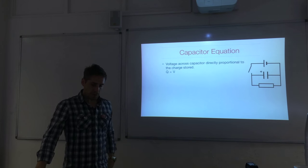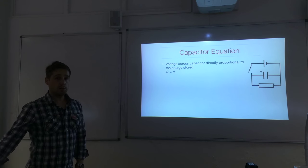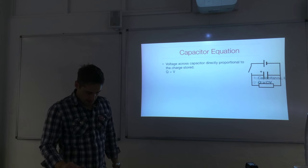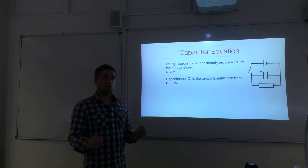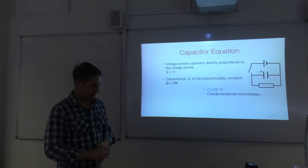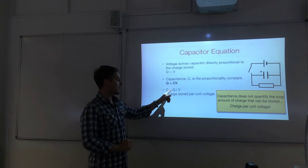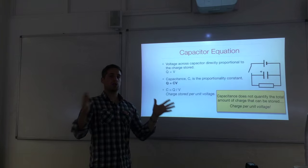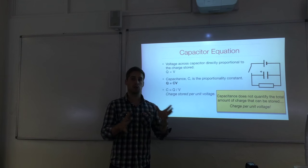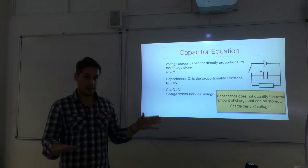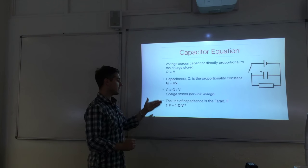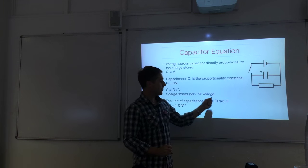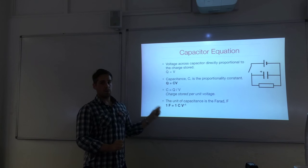The capacitor equation: the voltage across the capacitor is directly proportional to the charge stored on it, so Q is proportional to V. The proportionality constant is C, the capacitance. So Q equals CV, and capacitance is charge stored per unit voltage, Q over V. Capacitance does not tell you the total charge that can be stored — it tells you how much charge per unit voltage. The unit is the farad, F, where one farad equals one coulomb per volt.